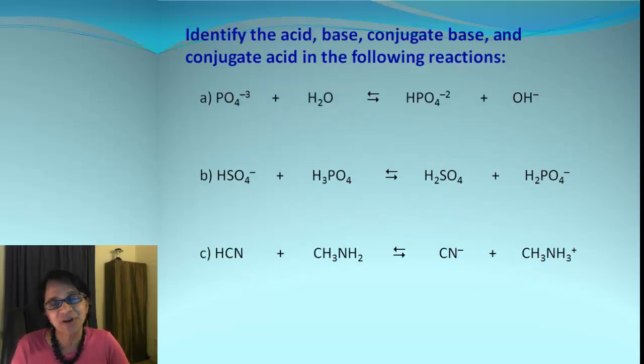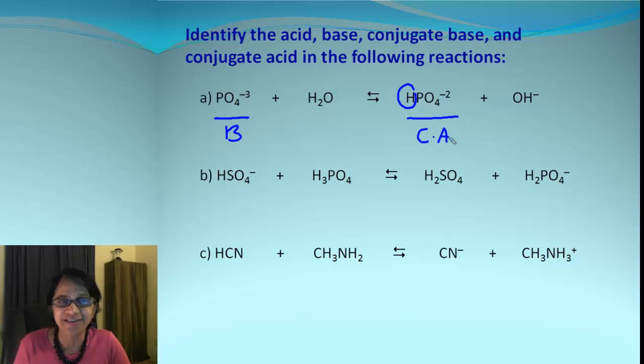Well let's find out conjugate acid-base pairs in this reaction. Let's first of all form the pairs. One of the pair I see is phosphate ion and HPO4^2-. What do we see here? This hydrogen is an extra there. That means this is a base and that must be a conjugate acid.